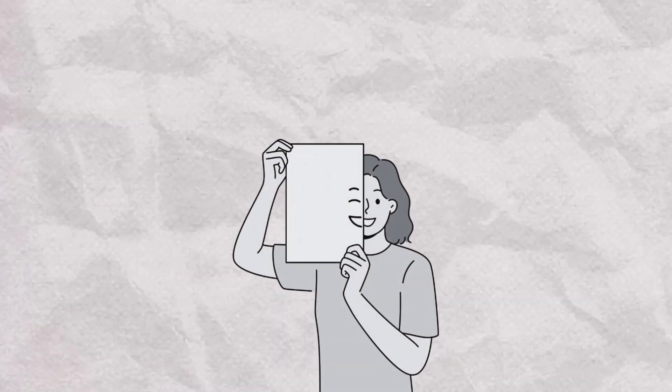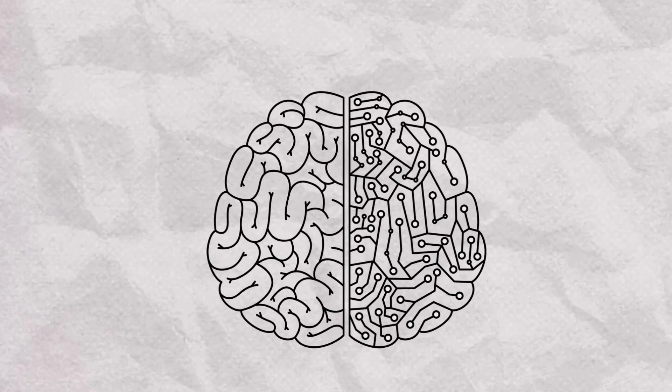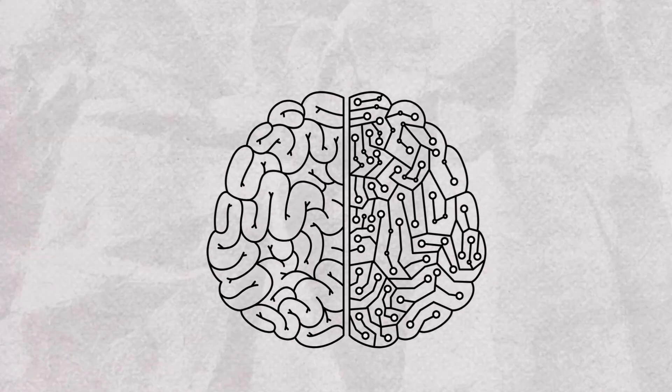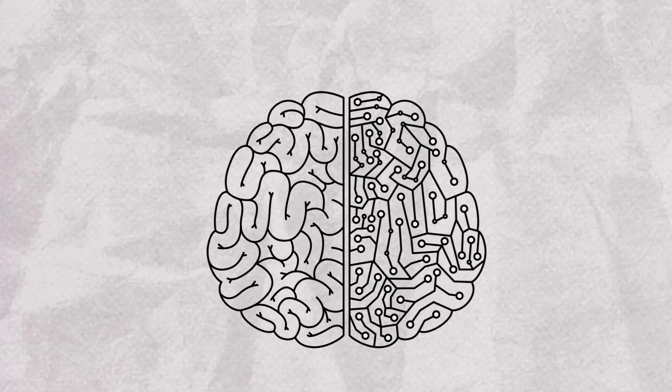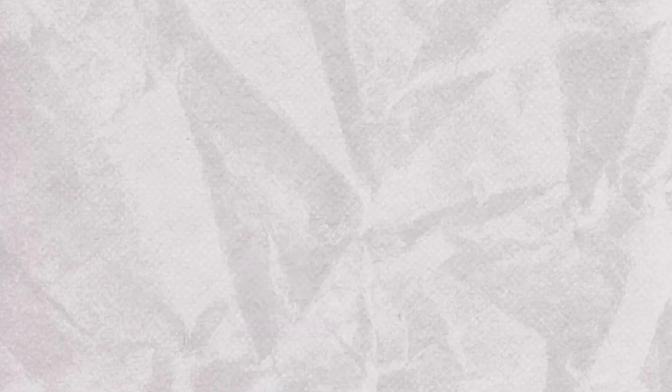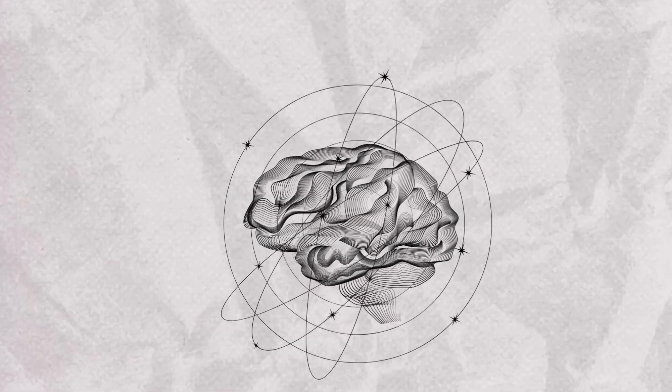Interesting fact number one, human behavior develops from mirror neurons. Mirror neurons are specialized cells in the brain that fire both when we perform an action and when we observe someone else performing the same action. Discovered in the 1990s, these neurons are found in the premotor cortex and other parts of the brain involved in movement and perception.